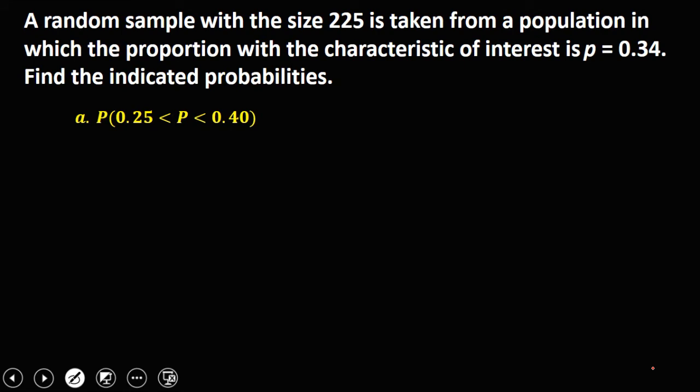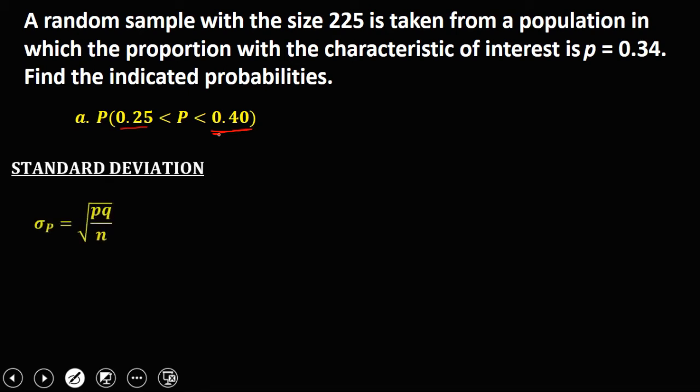For the next problem, a random sample of size 225 is taken from a population in which the proportion with the characteristic of interest is P = 0.34. Find the indicated probabilities. We first need to convert values to z-scores, so we solve for the standard deviation.